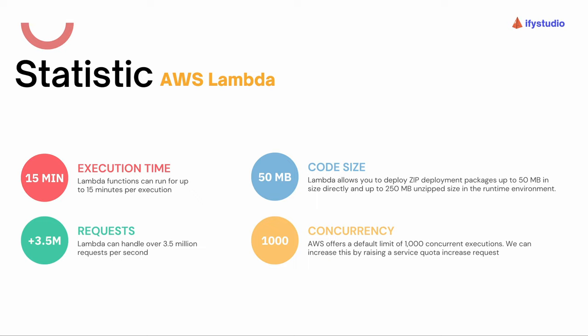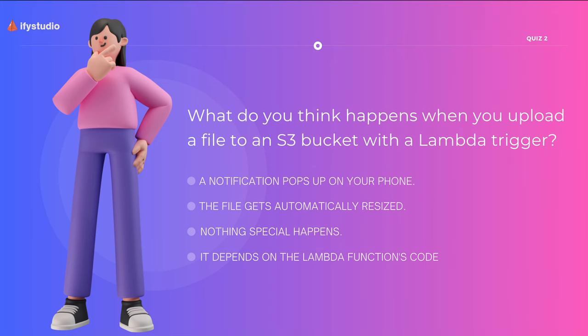Concurrency is how many Lambda functions can execute in parallel. By default, AWS sets 1,000 as a soft limit for concurrency, but you can raise a service quota increase request to increase this limit easily.